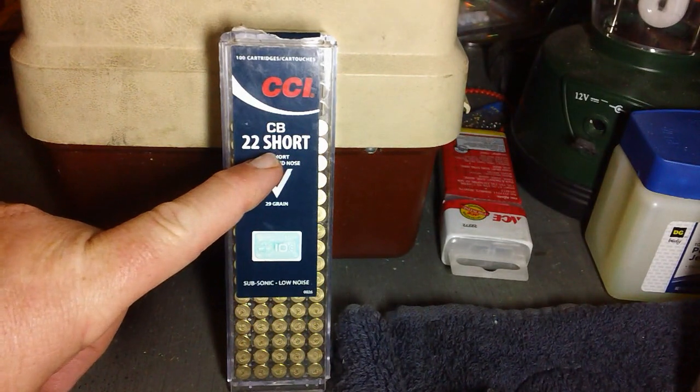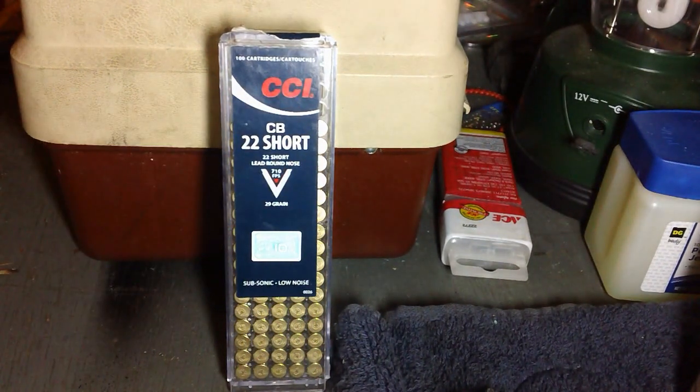So the question was, will a .22 short CB from CCI penetrate a 2x4?